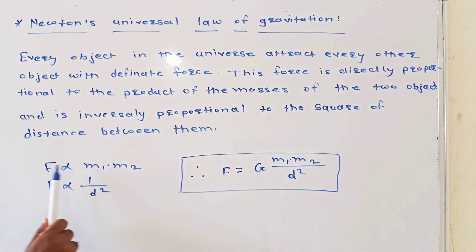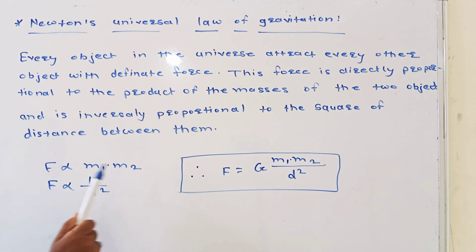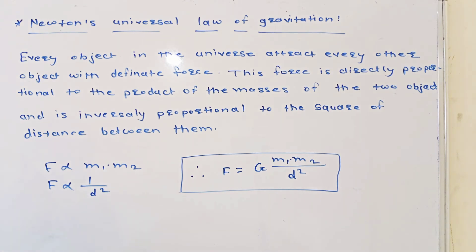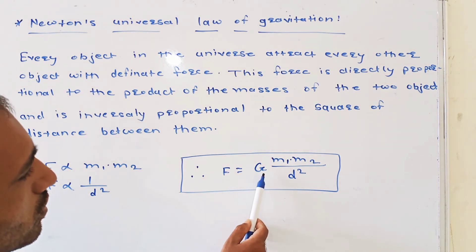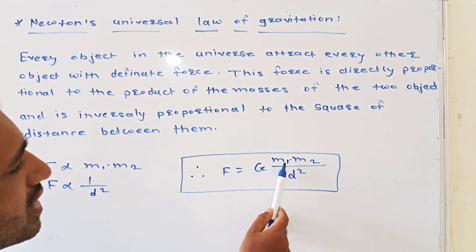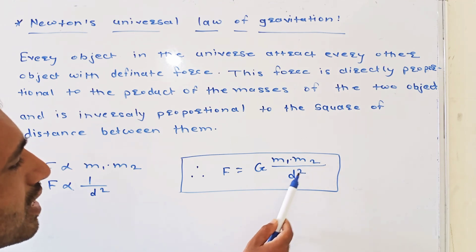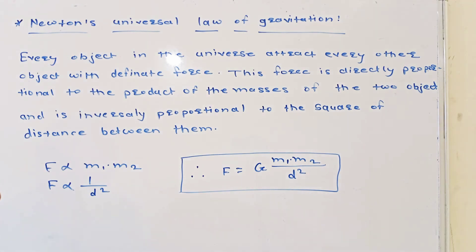The force is directly proportional to the product of their masses and inversely proportional to the square of the distance between them. So, the formula is: Force equals G times m1 times m2 divided by d squared.